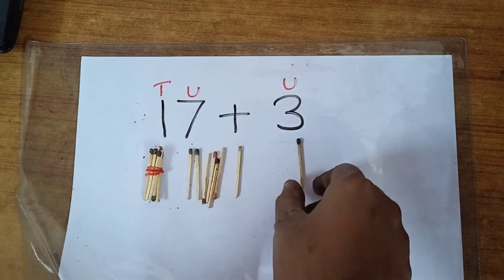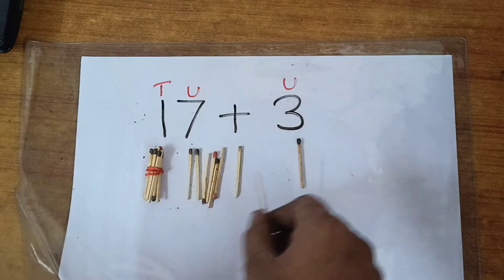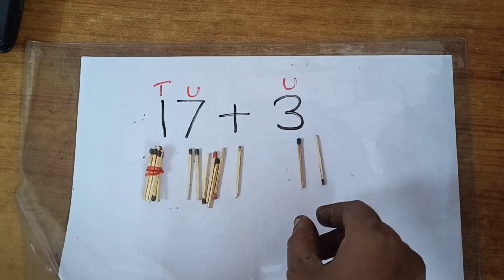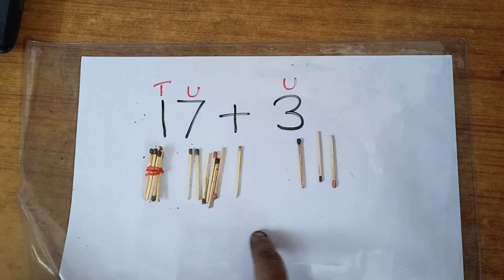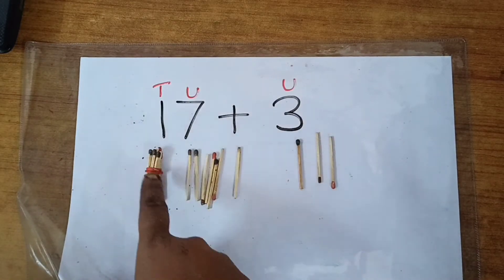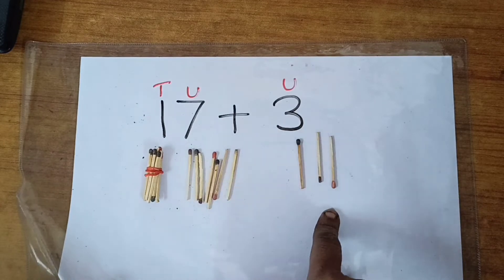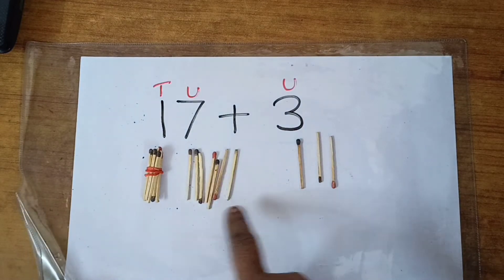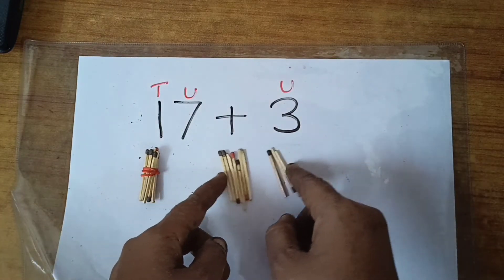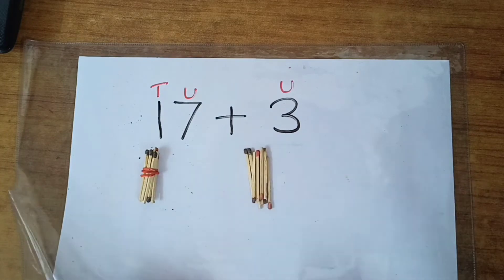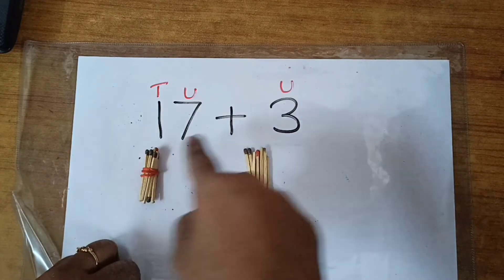So I will take 3 more units: 1, 2 and 3. So this became 1 ten 7 units plus 3 units. Now, units and units we will add, put together. This is our answer. Now let us count.